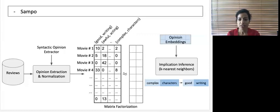Since opinions and implications often do not co-occur in the same review, SAMPO relies on a matrix factorization technique to summarize signals across multiple reviews. Specifically, it builds a matrix where each row is the item being reviewed and each column refers to the opinion extracted from the review corpus. Each cell indicates the number of times an opinion is expressed in the reviews of an item.